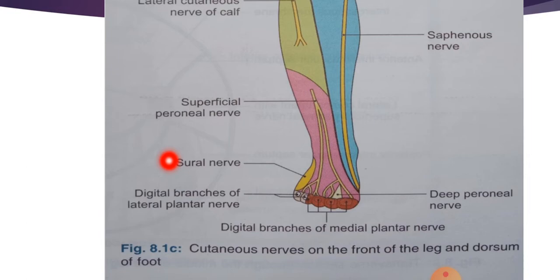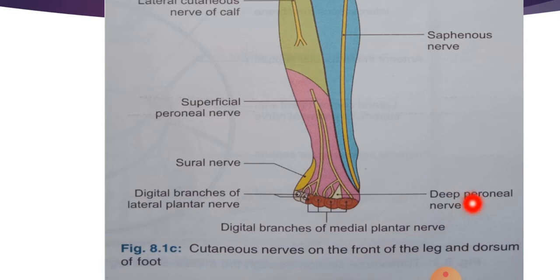The next one is the sural nerve. It is a branch of the tibial nerve and arises in the middle of the popliteal fossa, then runs vertically downwards, pierces the deep fascia in the middle of the back of the leg, and accompanies the small saphenous vein. It supplies the skin of the lower half of the back of the leg and of the whole of the lateral border of the foot up to the tip of the little toe.